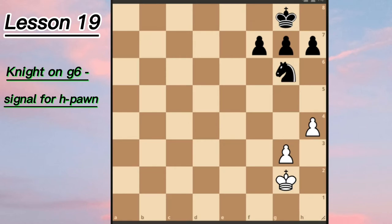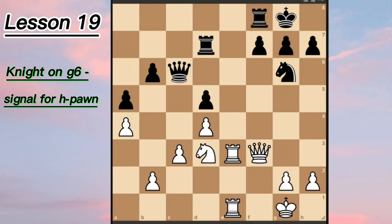First we're going to look at two positions. Position number one was played with White pieces by Botvinnik, and Balislav Skip was his opponent. The game was played in Leningrad in 1941. Botvinnik wrote about this position that Black has just played queen to c6.